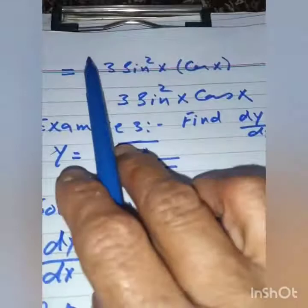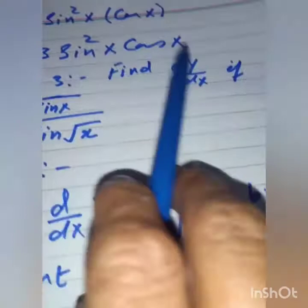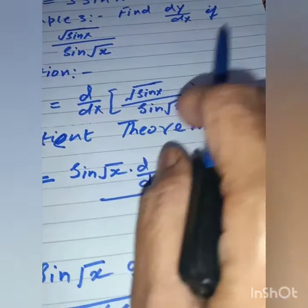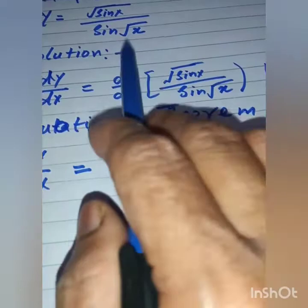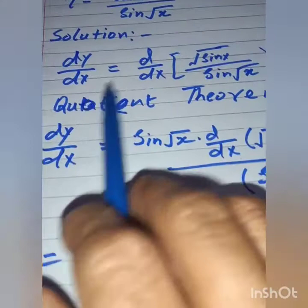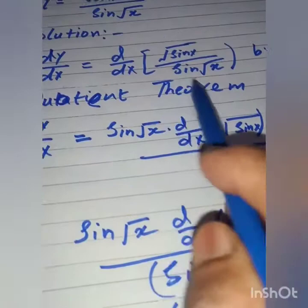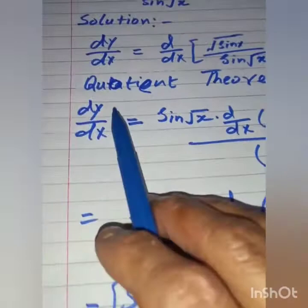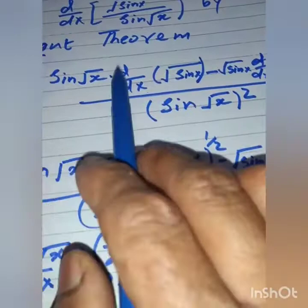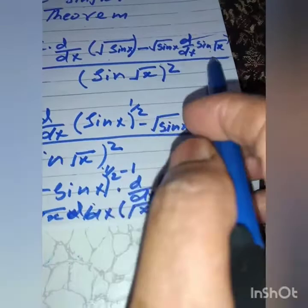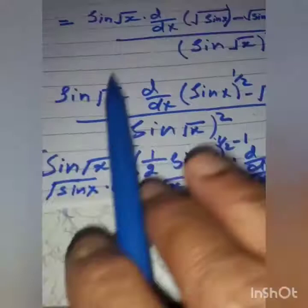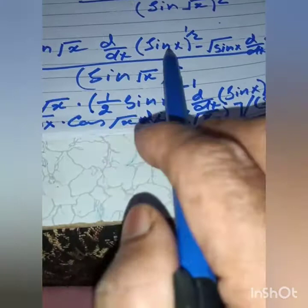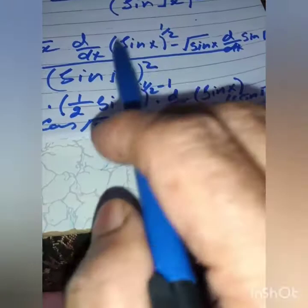Example 3: find dy/dx if y = √(sin x) / sin(√x). Taking the derivative on both sides, dy/dx = d/dx [√(sin x) / sin(√x)]. We apply the quotient rule: denominator times derivative of numerator minus numerator times derivative of denominator, all divided by denominator squared. So this equals sin(√x) · d/dx[sin^(1/2)(x)] minus √(sin x) · d/dx[sin(√x)], divided by sin²(√x).